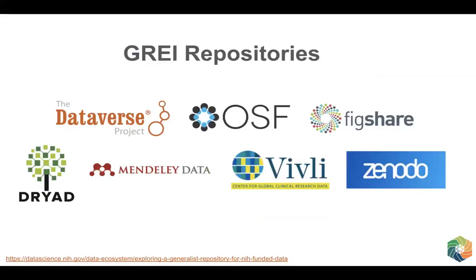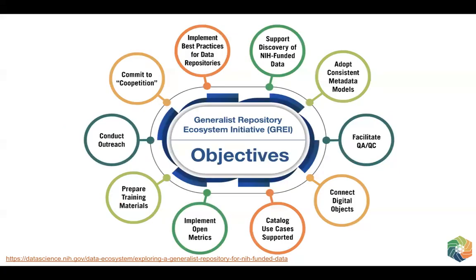GRAE brings together seven different generalist repositories: the Harvard Dataverse project, the Center for Open Science's Open Science Framework, Figshare, Dryad, Mendeley Data, Vivli, and Zenodo. These are seven different established generalist repositories that all aim to meet repository best practices and are already used by many NIH-funded researchers. There are several objectives laid out for the GRAE program, and my colleague John will present several of these in examples of our work thus far.